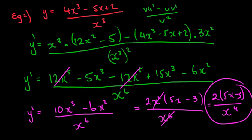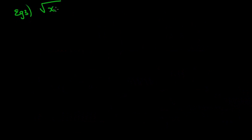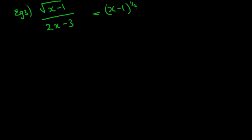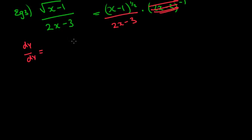That's a slightly more challenging question and they do get quite tough. Now let's look at one of the more challenging ones: √(x - 1) / (2x - 3). If you prefer the product rule, you could write this as (x - 1)^(1/2) · (2x - 3)^(-1), but we're going to use the quotient rule. So dy/dx with denominator (2x - 3).